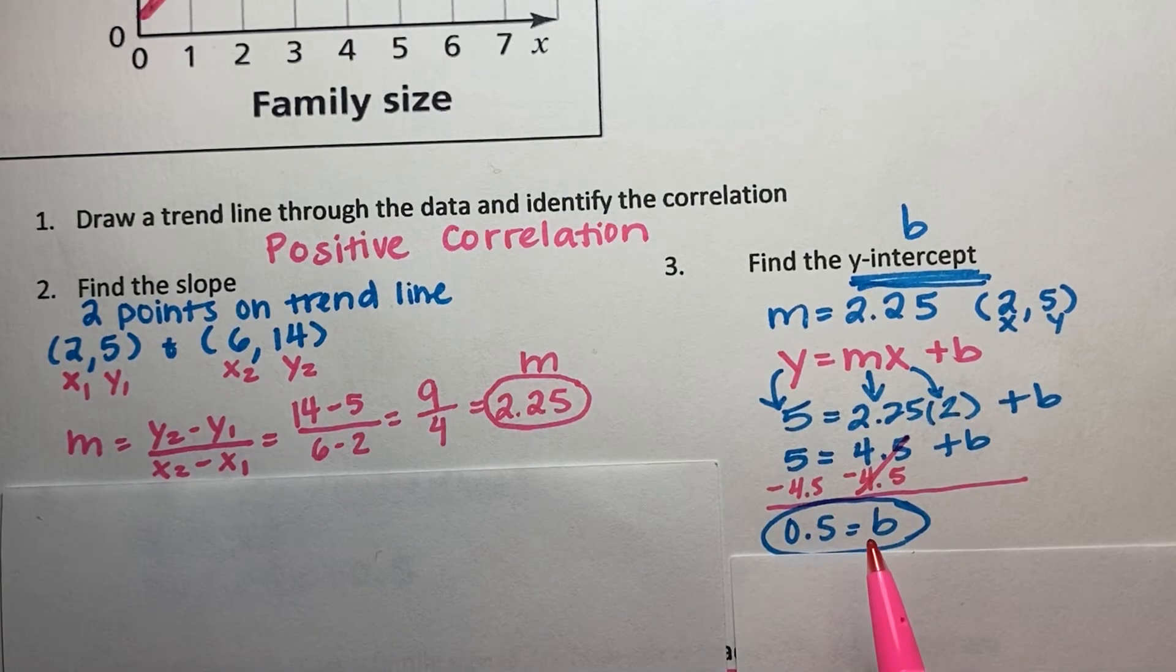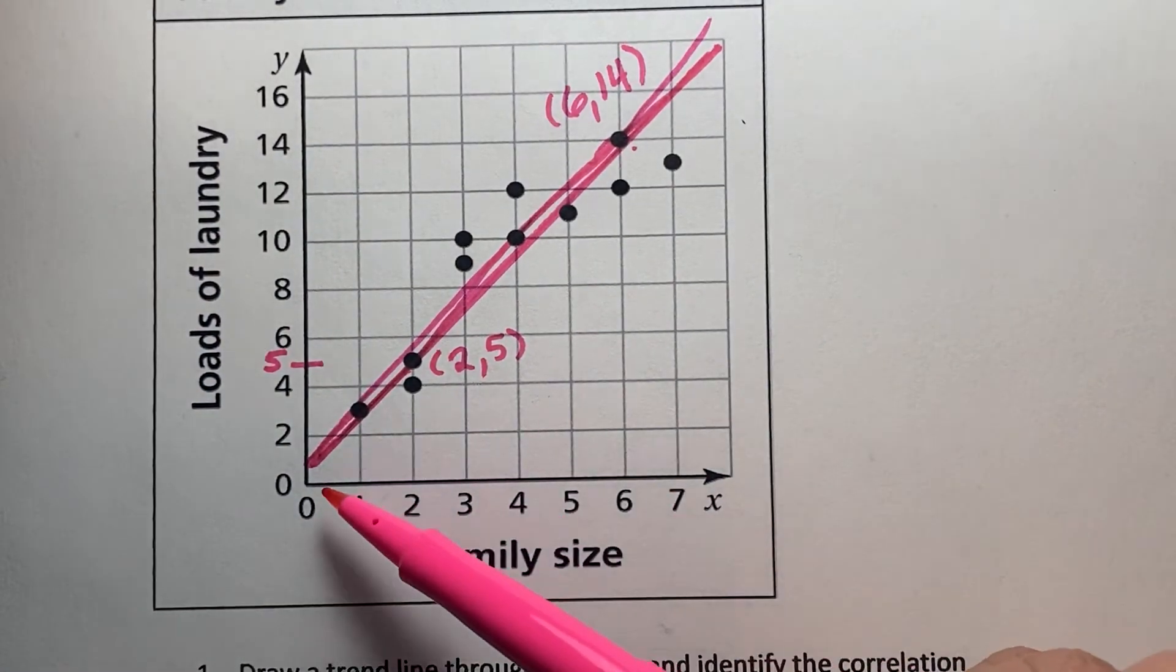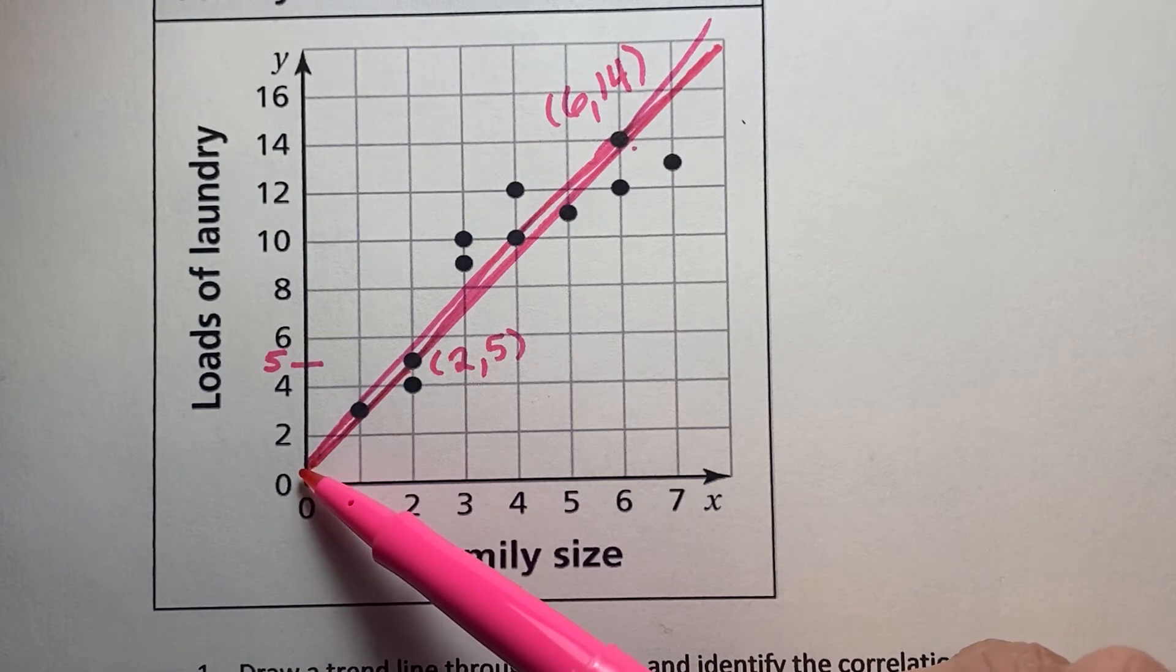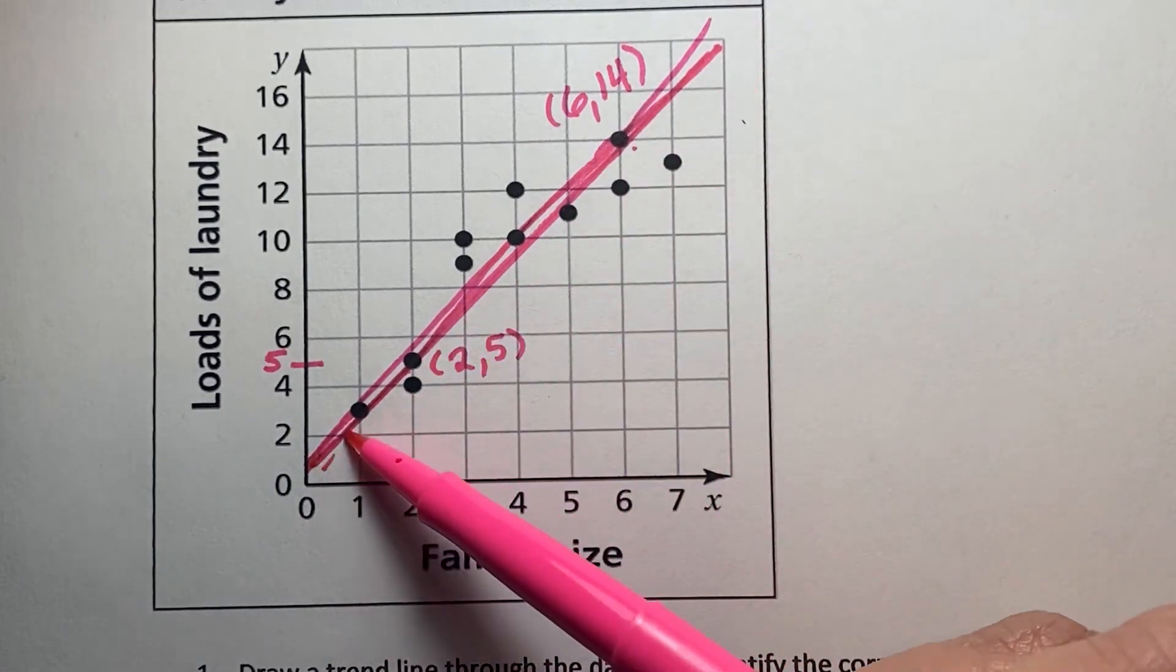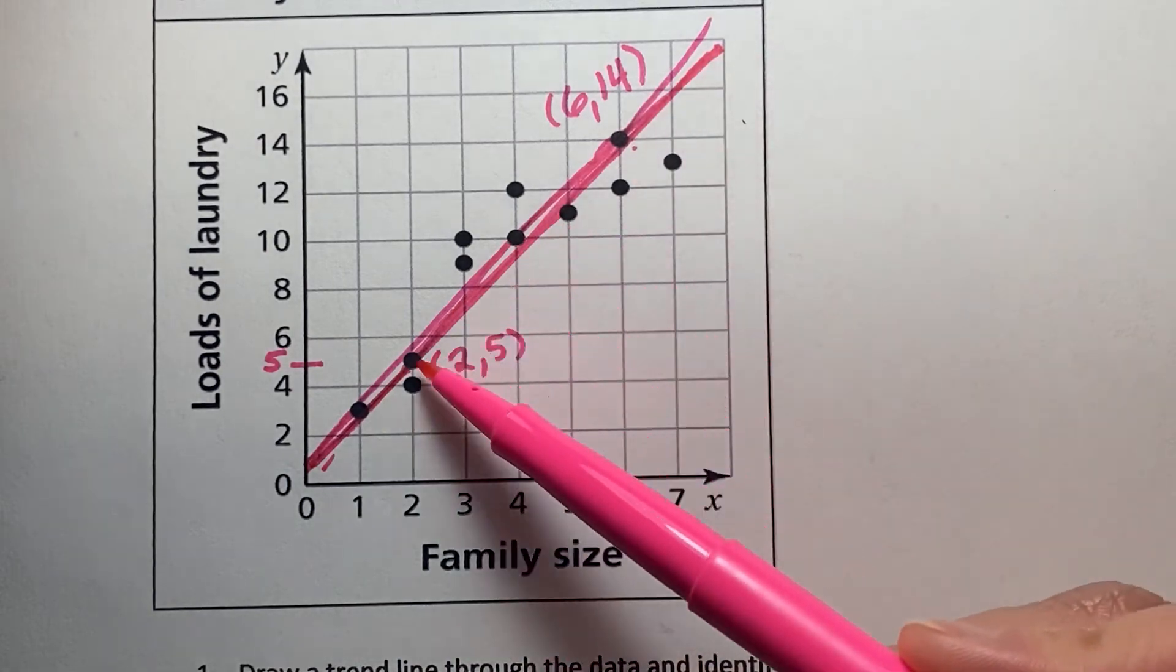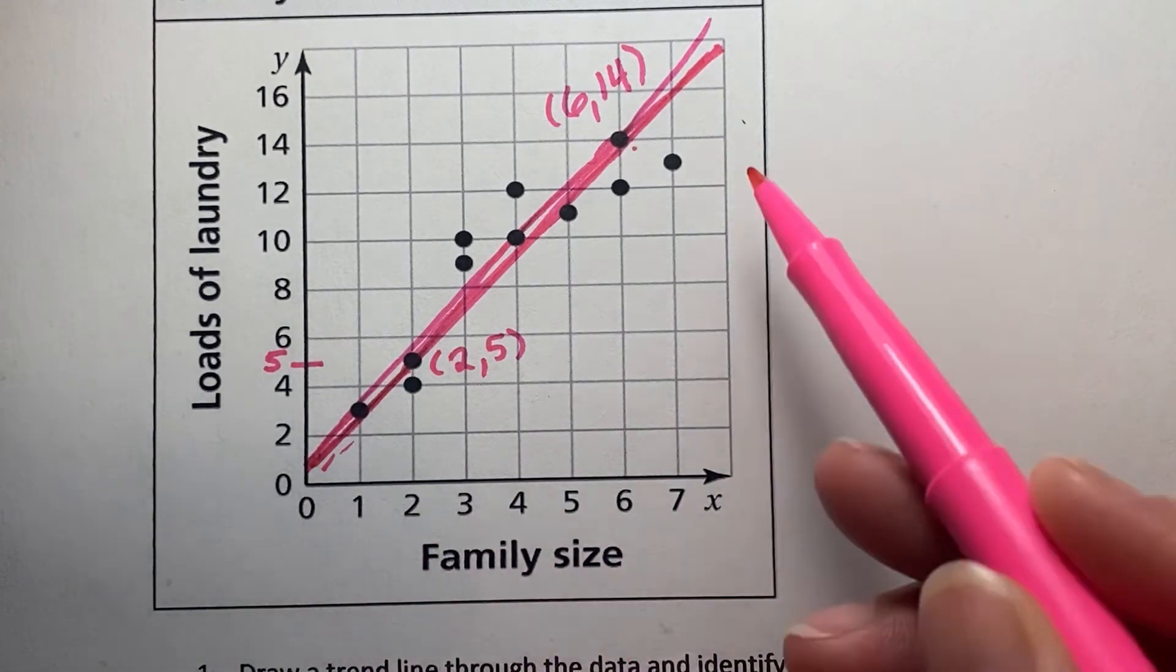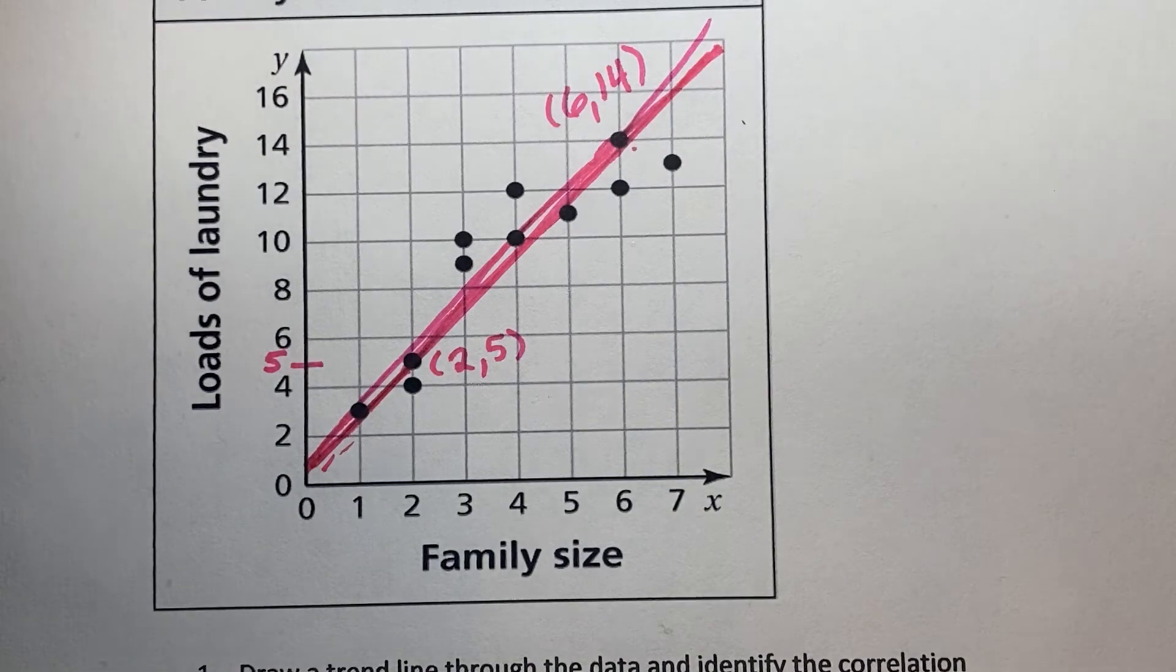So in this case, we now have found b and m, m the slope, b the y-intercept. And I know going back and looking at this graph, you may be thinking, if the y-intercept is 0.5, that would mean a size family of 0 would have 0.5 loads of laundry. Well, you want to understand that we are just drawing a trend line. It's not perfect. So this is just going to be a general equation to predict other values. If the family size is not graphed on here, we can make that prediction based on our slope, y-intercept. And now we're going to go ahead and write the equation.